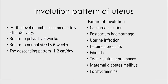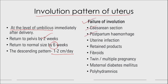Regarding uterine involution: immediately after delivery, the uterus is at the level of the umbilicus. It returns to the pelvis by 2 weeks, and to normal size by 6 weeks, descending at 1 to 2 centimeters per day. Failure of involution can be due to caesarean section, postpartum haemorrhage, uterine infection, retained products, fibroids, twin or multiple pregnancy, maternal diabetes mellitus, or polyhydramnios.